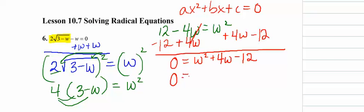Now we factor this into two groups. We're going to use the AC method. We have 1 times negative 12 is negative 12. And we want our sum to be the middle B number 4.